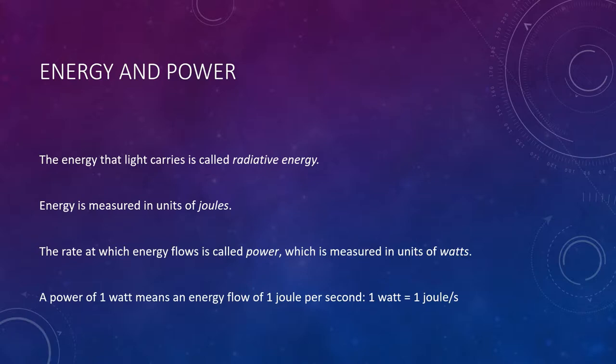We measure energy in units of joules. With light, however, we are usually more interested in the rate at which it carries energy toward or away from us. The rate of energy flow is called power, which we measure in units called watts. The power of one watt means an energy flow of one joule per second. For example, a 100 watt lightbulb requires 100 joules of energy for each second it is turned on. Interestingly, the power requirement of an average human is actually about the same as that of a 100 watt lightbulb.